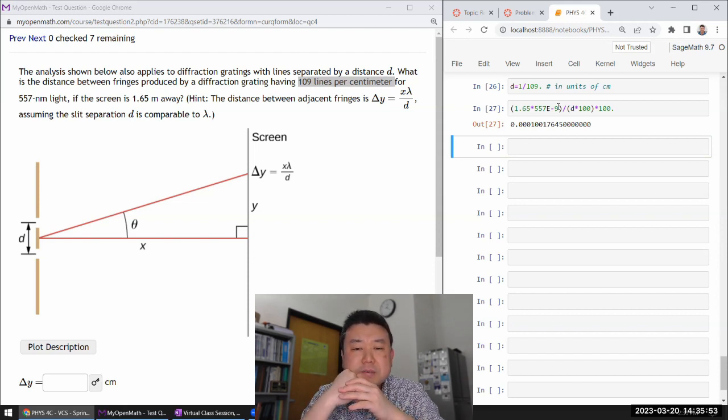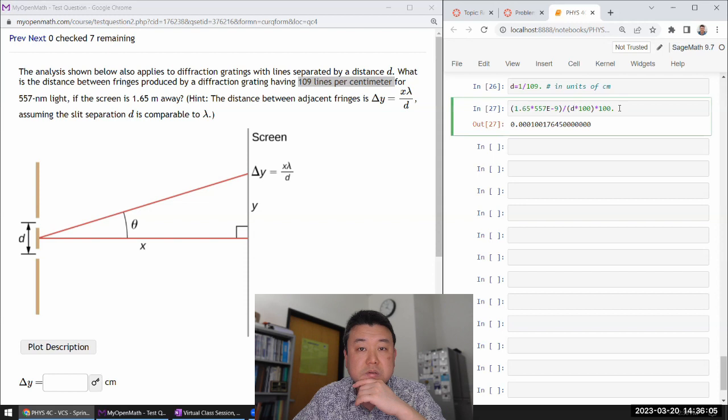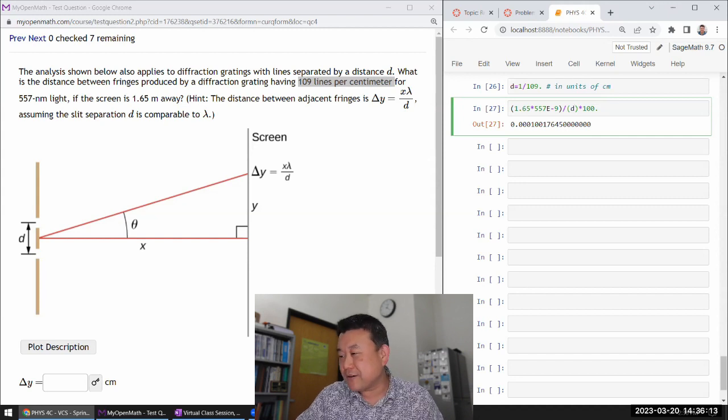To convert from meter to centimeter I need to multiply by 100. Feels like I might have missed something. 1.65 meters away, lambda is 557. I gotta stop converting units in my head, especially when there are reciprocal symbols - sometimes I make mistakes.